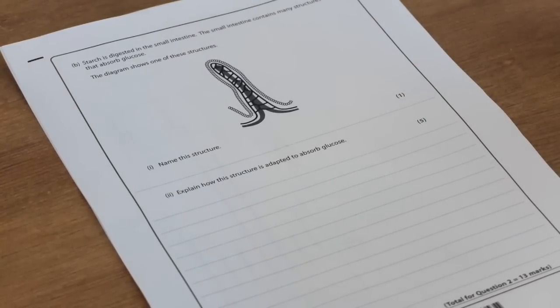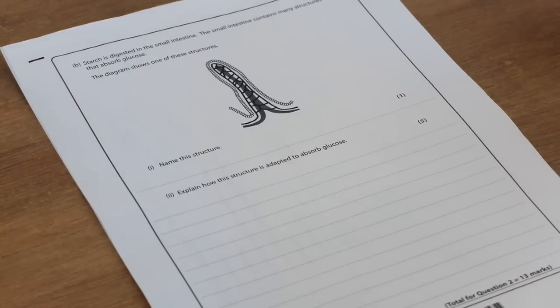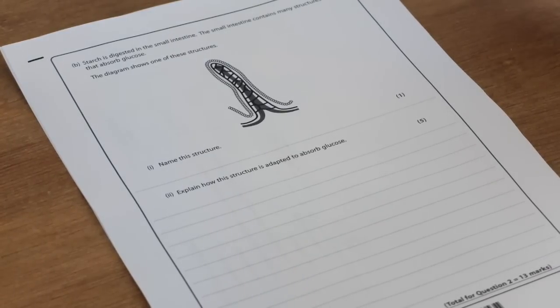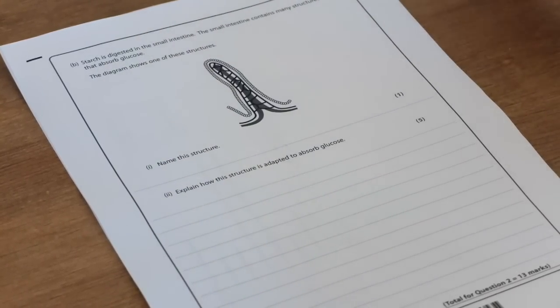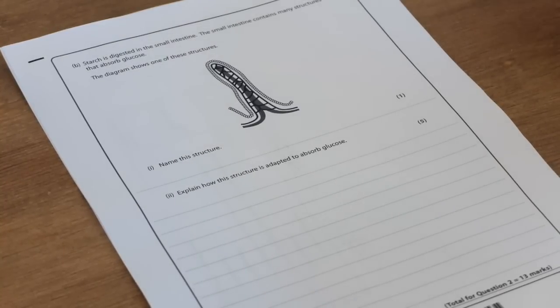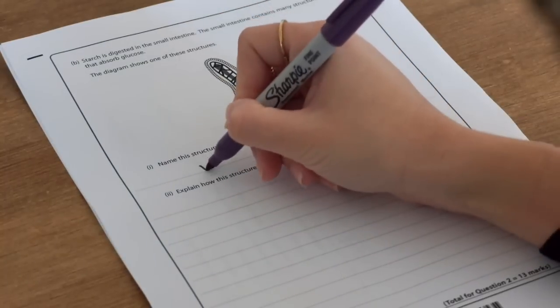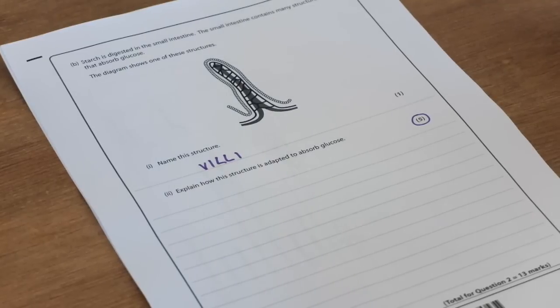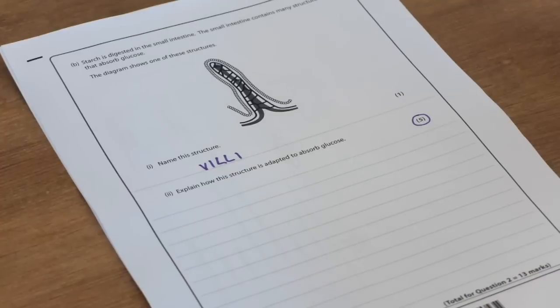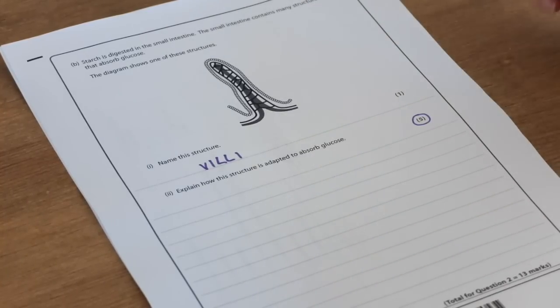I have a biology past paper question here. As always, make sure you read every single word. Please don't just skip over to where you think the question starts, because too many people lose marks by not labelling diagrams or adding arrows for diagrams and all that sort of thing, which is really annoying because they're easy marks to get. Starch is digested in the small intestine. Name this structure. Because it's got that very distinctive finger-like projection, I know it's the villi. And then in part two, we're being asked to explain how the structure is adapted to absorb glucose. And look, it's worth five marks. I need to be making five separate points.